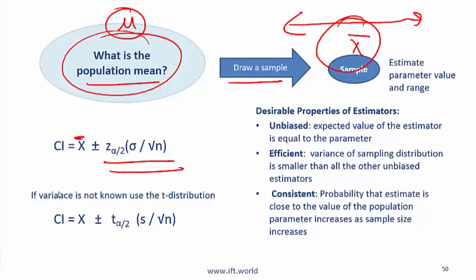That is given by this expression. z alpha over 2 is calculated based on your degree of confidence. If you want to speak with 95% confidence, then the z value will be approximately 1.96. If you want to speak with 90% confidence, then the z value will be less. 99% confidence, the z value will be more than that. And then the second term is the standard error that we just talked about, which is the standard deviation of the population divided by square root of n where n is the sample size.